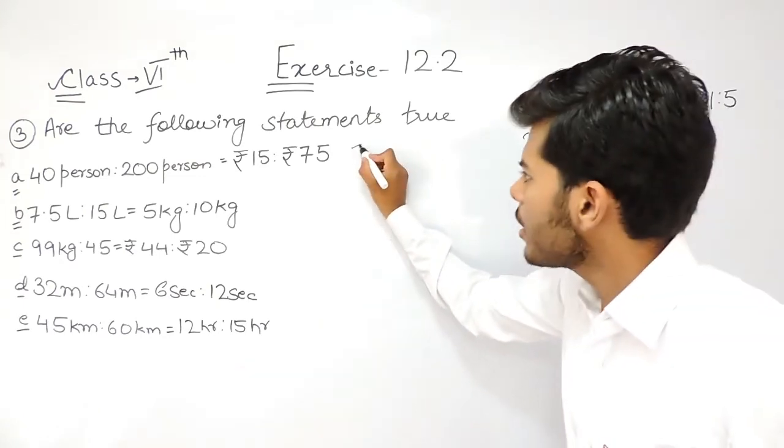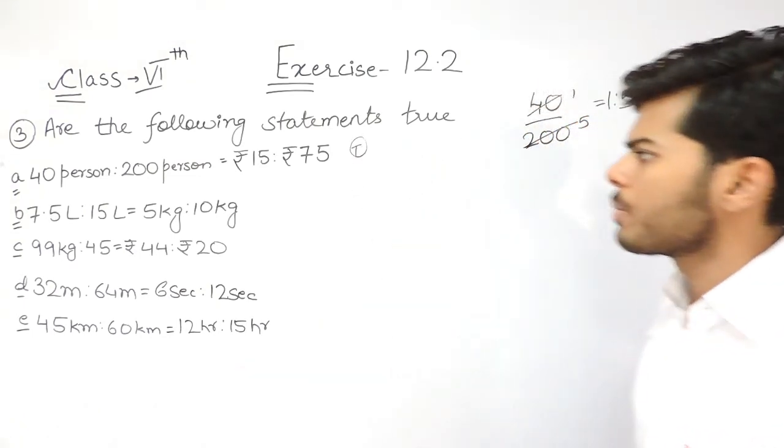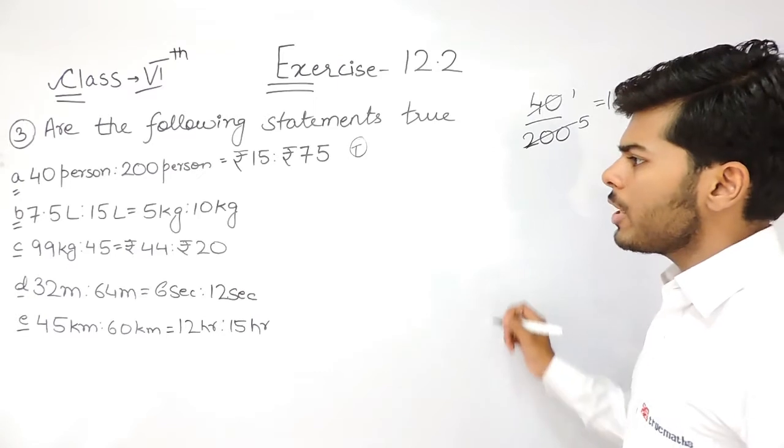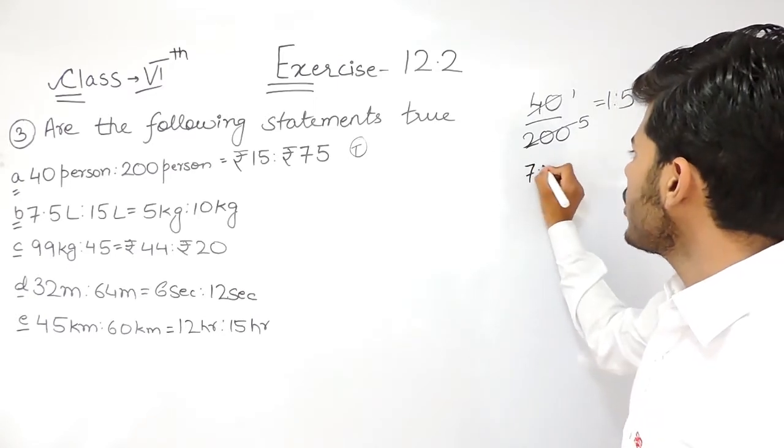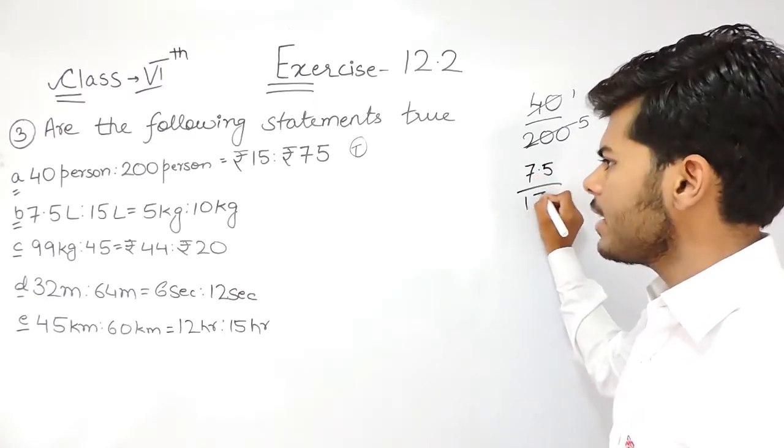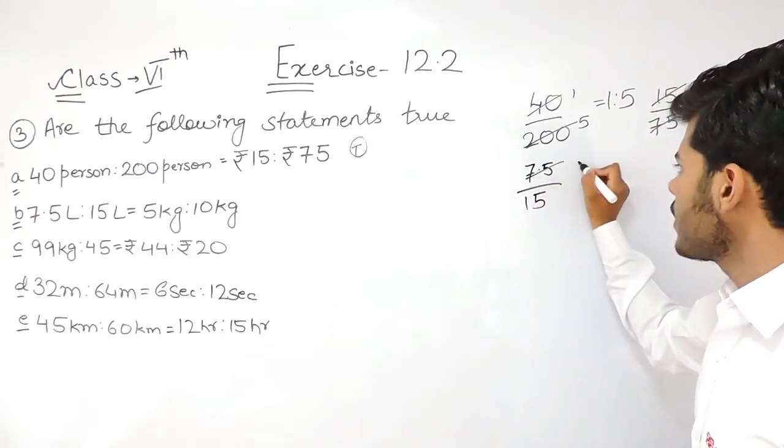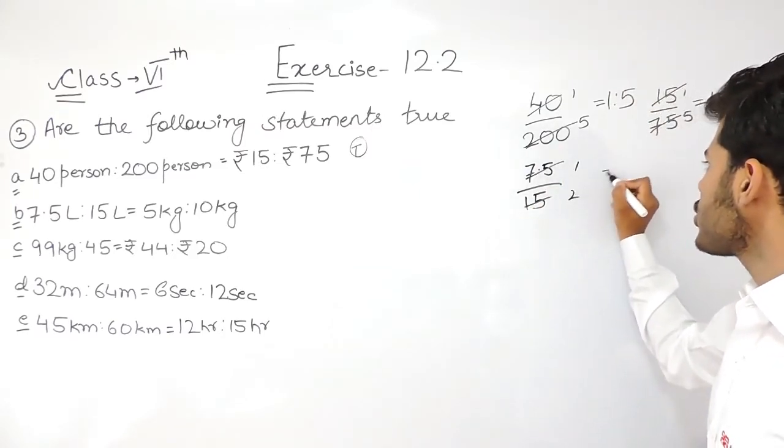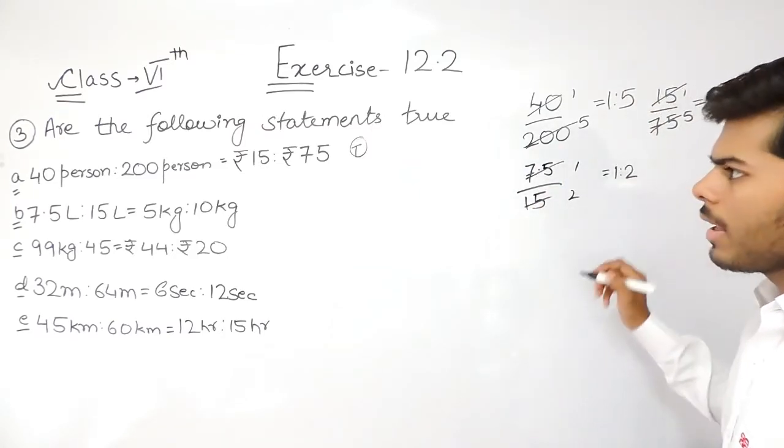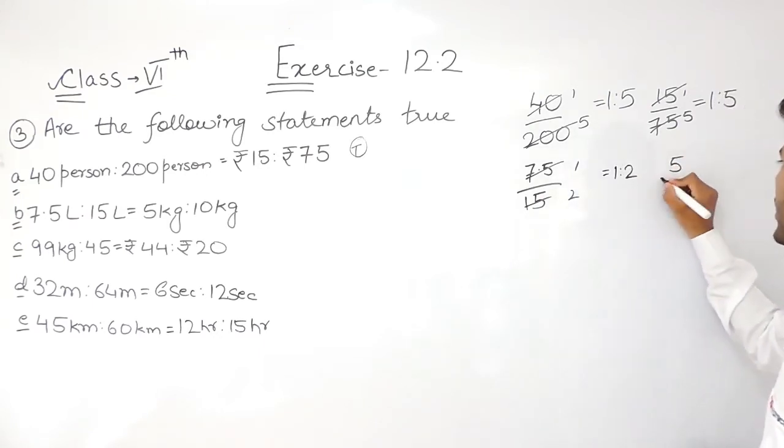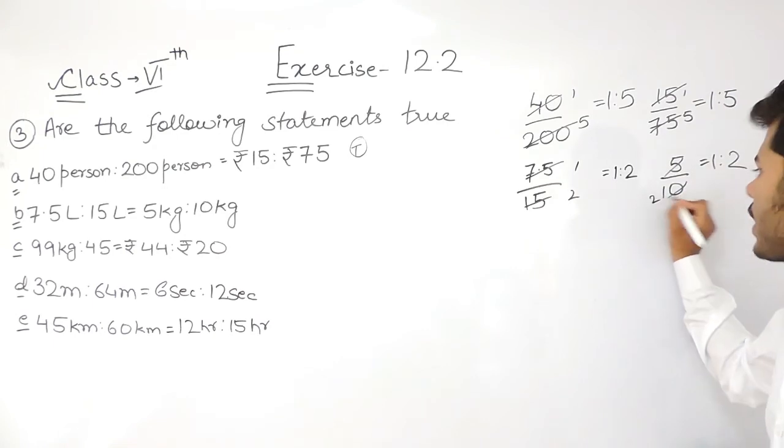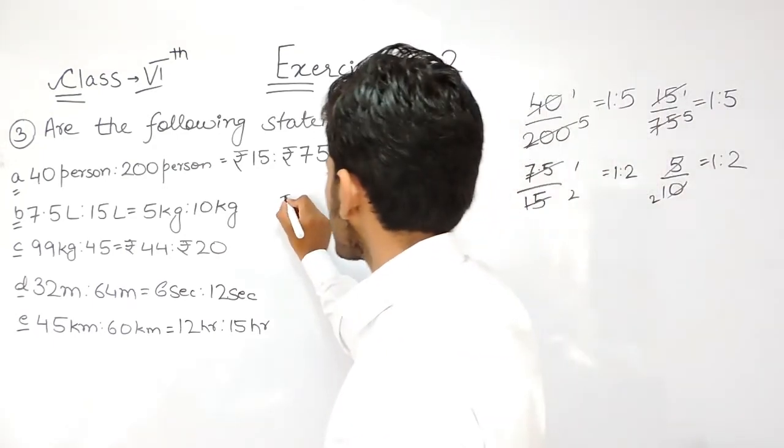Now coming to statement 2, it says 7.5 ratio 15, so 1 times and the ratio will be 1 ratio 2. And it is 5 kgs to 10 kgs, that is again 1 ratio 2, 5 times 2. So this statement is also true.